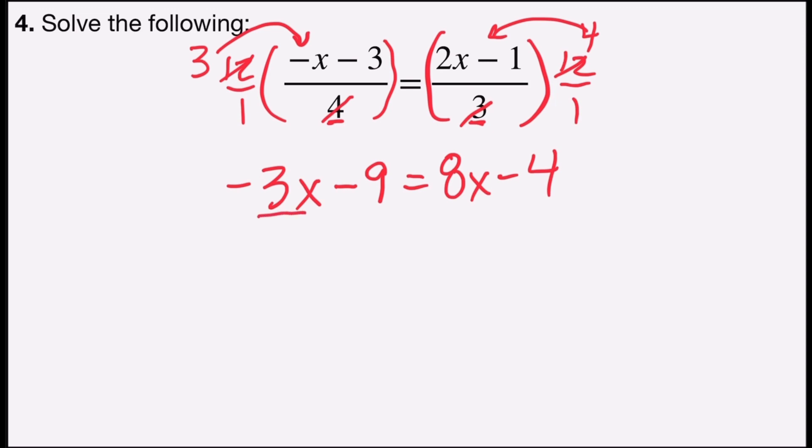So the lesser one is negative 3x, which means I'm going to add 3x to both sides. Negative 3x plus 3x is 0. 0 minus 9 is negative 9. On the right side, 8x plus 3x is 11x, minus 4.